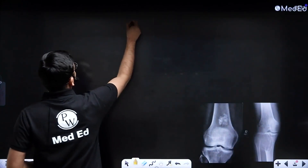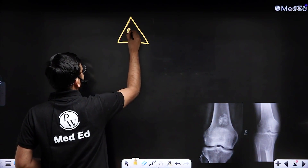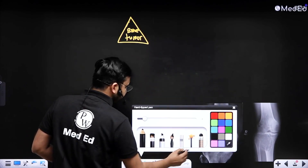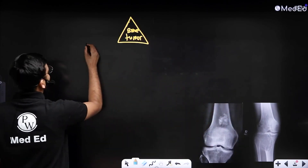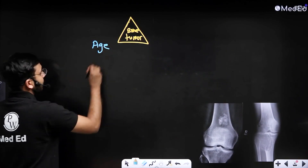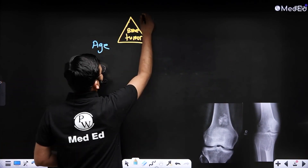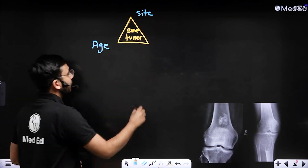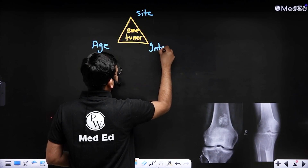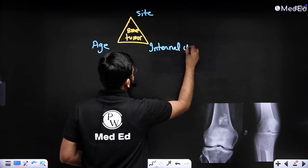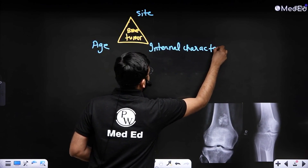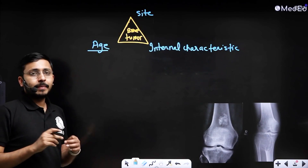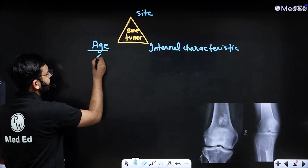When we want to make the diagnosis of a bone tumor, there are three things we first look at: number one, the age of the patient; number two, the site involved; and number three, the internal characteristics of the lesion. Regarding age in bone tumor diagnosis, we are mainly interested in knowing whether the patient is skeletally mature or skeletally immature.